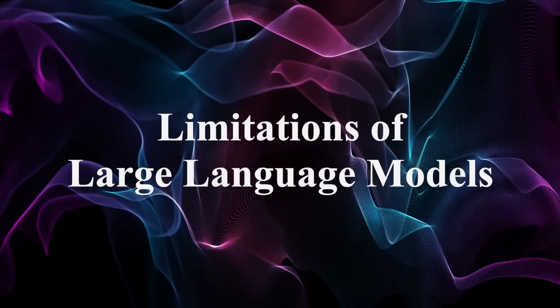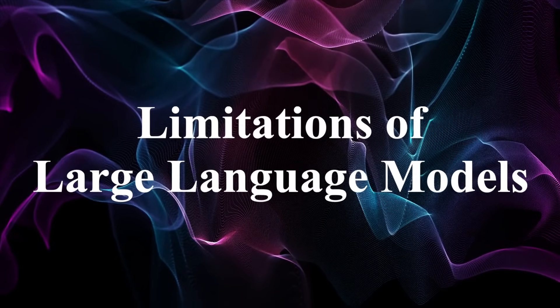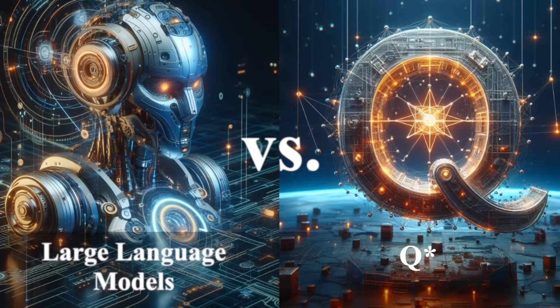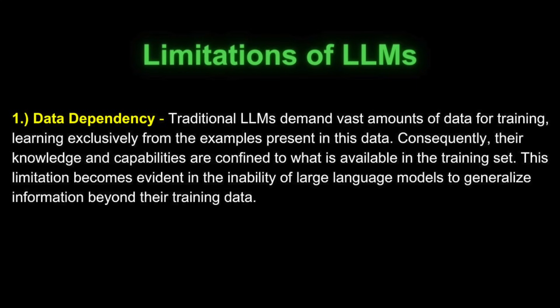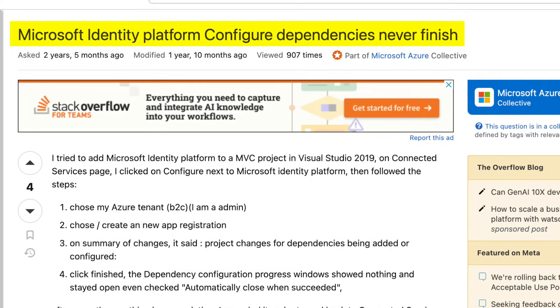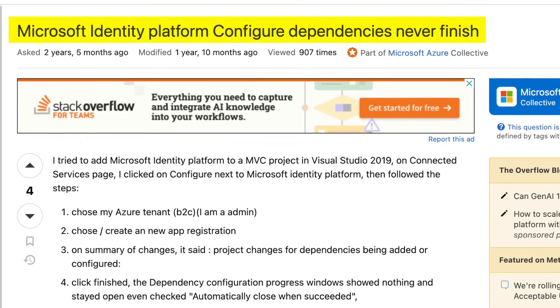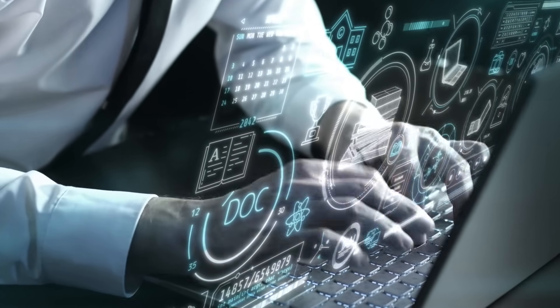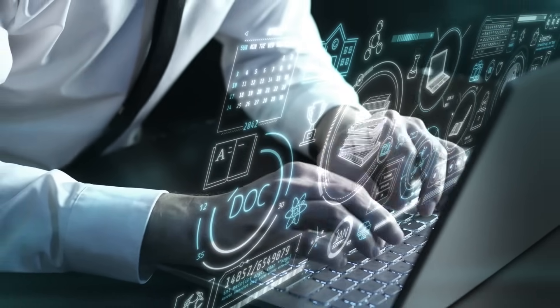Now let's delve into some limitations of large language models. Understanding these limitations is key to appreciating the benefits of Q-learning. Firstly, data dependency stands out as a significant limitation of LLMs. Traditional LLMs demand vast amounts of data for training, learning exclusively from examples present in that data. Consequently, their knowledge and capabilities are confined to what is available in the training set, and their performance is contingent on the quality of that training data.